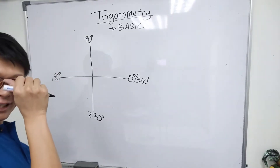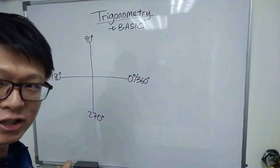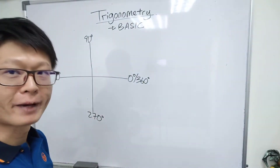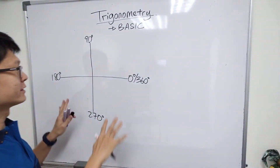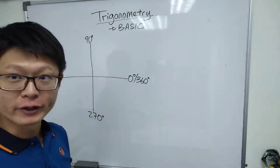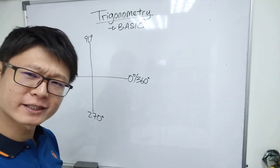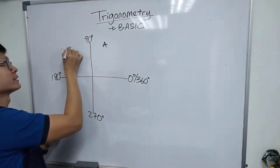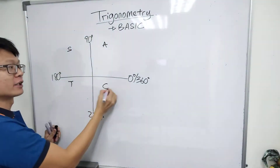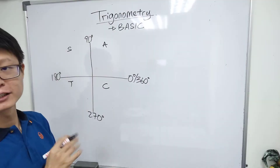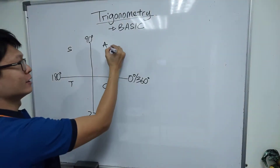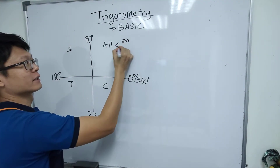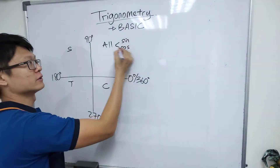Good morning. This is trigonometry — we're going to learn the basics. There's a mnemonic: 'All Science Teacher Crazy.' All means all — sine, cosine, tangent — are all positive.